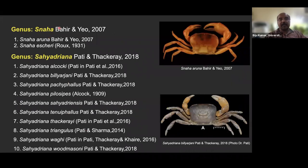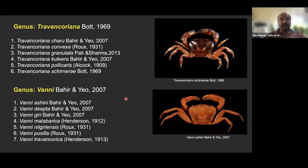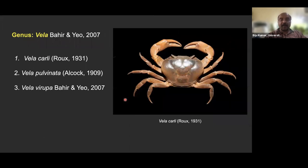Snaha has two species. The largest genus in terms of species diversity is Sahyadriana, found primarily in the northern part of the Western Ghats, with around 10 species — the genus was described in 2018. Tramankuriana is primarily in the southern part with six species; Vanni has seven species; and Vela is a very characteristic genus with three species.